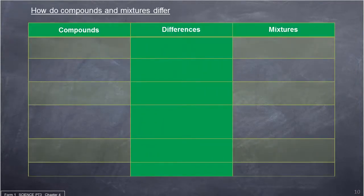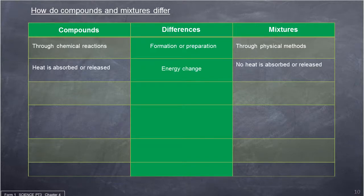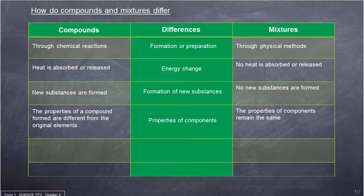How do compounds and mixtures differ? Compounds are formed through chemical reactions while mixtures are formed through physical methods. Heat is absorbed or released during the formation of compounds, while no heat is absorbed or released during the formation of mixtures. New substances are formed when elements react to form compounds, as atoms join using chemical bonds. No new substances are formed when substances are physically joined together to form mixtures. The properties of a compound are different from the original elements, while the properties of components of a mixture remain the same.